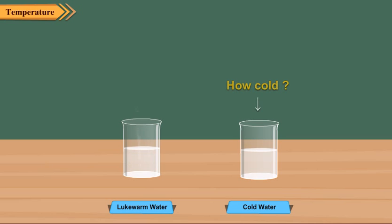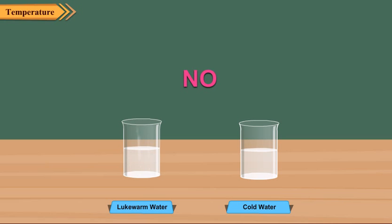Now can you say how cold or how warm the water is? The answer is no. By dipping fingers we can just say which tumbler has warm water and which has cold water, but we cannot say how much cold or how much hot the water is. This measurement is called temperature.